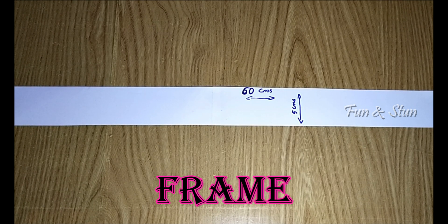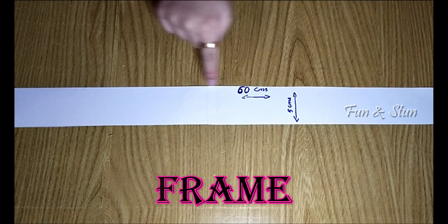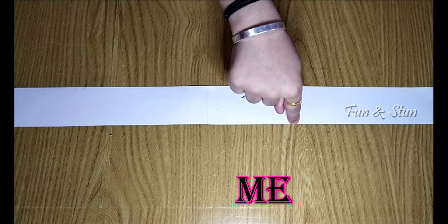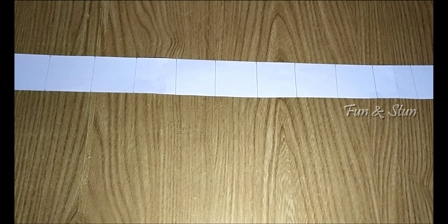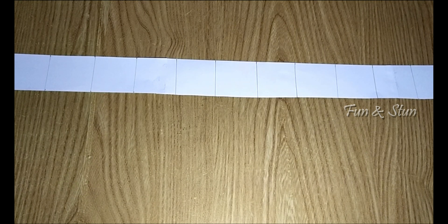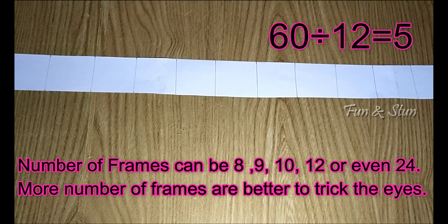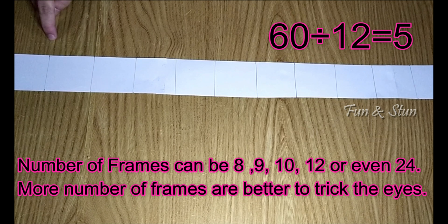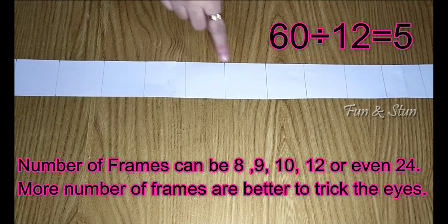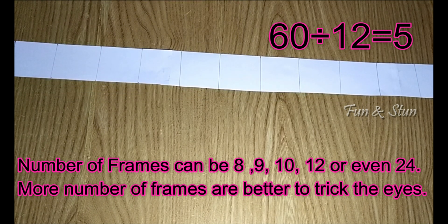To make the frame, I have taken a white paper with 60 centimeters length and 5 centimeters width. I'm going to make 12 frames. So I will be dividing the paper into 12 equal sections. Since my chart is 60 centimeters and after dividing it by 12, I will get 5 centimeters for each frame. So draw a line at every 5 centimeters.